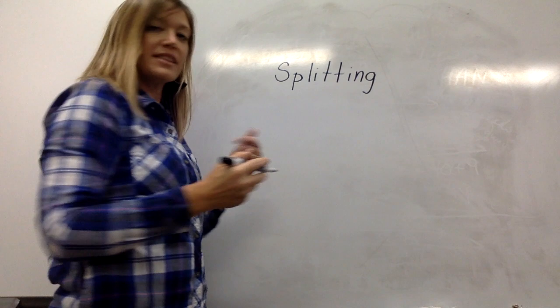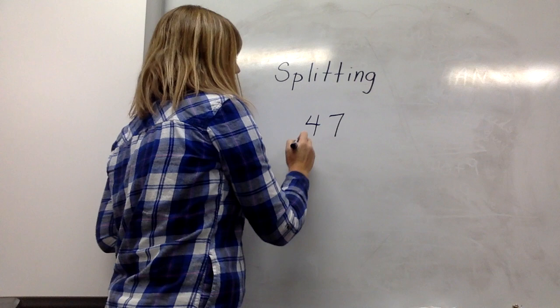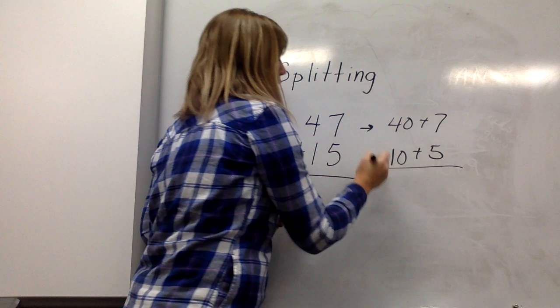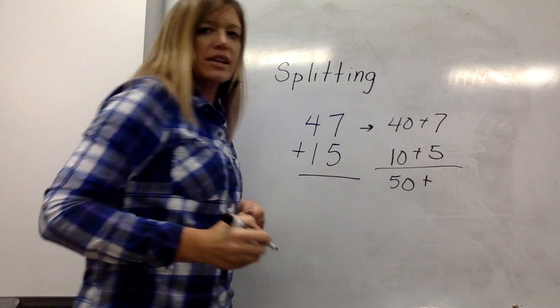Here's an example of how it helps kids see how numbers will be regrouped. If we have 47 plus 15, when I use the splitting method I see 40 and 7, and 10 and 5. When I add 40 and 10 together I have 50. When I add 7 and 5 together I have 12.